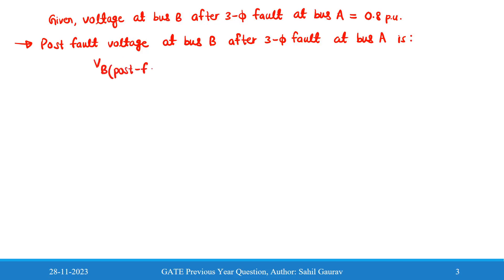V_B(post-fault), post-fault voltage at bus B equal to pre-fault voltage at bus B minus Z_AB times the fault current at A.